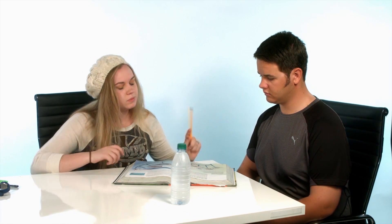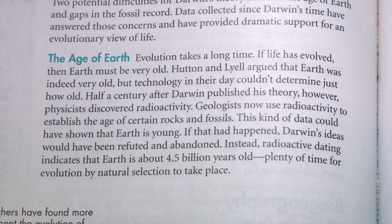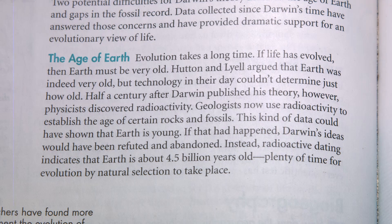This is one of the most heated battles — this whole dating issue. That's because time is at the foundation for everything evolutionary theory teaches. Geologists now use radioactivity to establish the age of certain rocks and fossils. This kind of data could have shown that the Earth is young. If that had happened, Darwin's ideas would have been refuted and abandoned. Instead, radioactive dating indicates the Earth is about 4.5 billion years old — plenty of time for evolution and natural selection to take place.